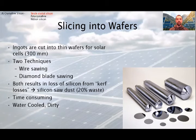After the building of ingots, they are cut into thin wafers or solar cells. There are two techniques for this, wire sawing and diamond blade sawing. Both produce around 20% waste from kerf loss, silicon sawdust. The ingot is hard, so the slicing is time consuming and dirty and requires water for cooling. But finally, there are silicon wafers for the solar cells.